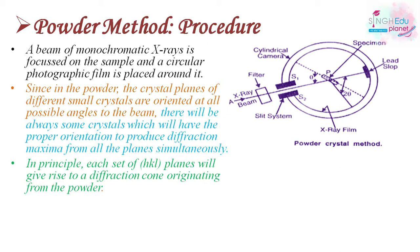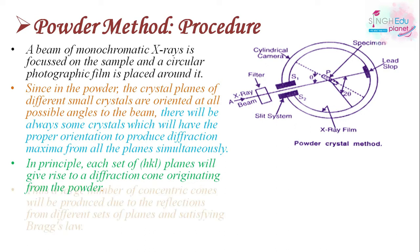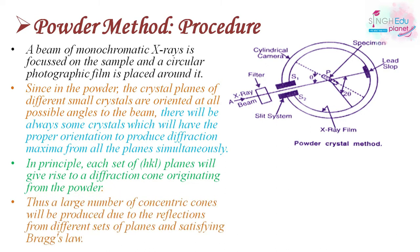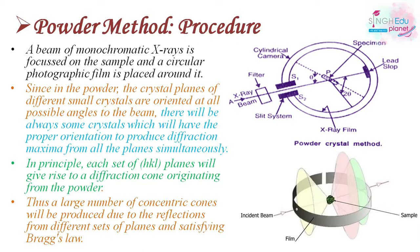All the X-rays from different planes produce a cone-type structure, and many planes produce many concentric cones — as shown in the figure with the pink color and green color on the photographic film. A large number of concentric cones are produced due to reflections from different sets of planes, each satisfying different orientations.